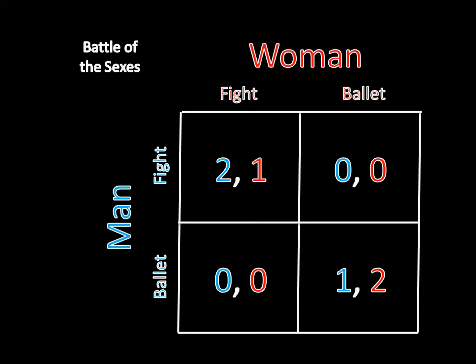If you'll recall, we had this matrix originally. The story is that a man and a woman are trying to coordinate on their form of entertainment for the evening. The man wants to go see the fight, and the woman wants to go see the ballet, but they'd both rather go together to somewhere than end up being alone. And that gives us those payoffs.